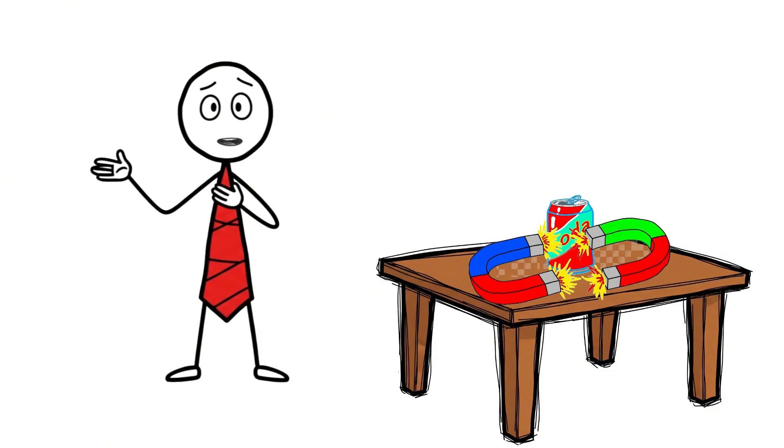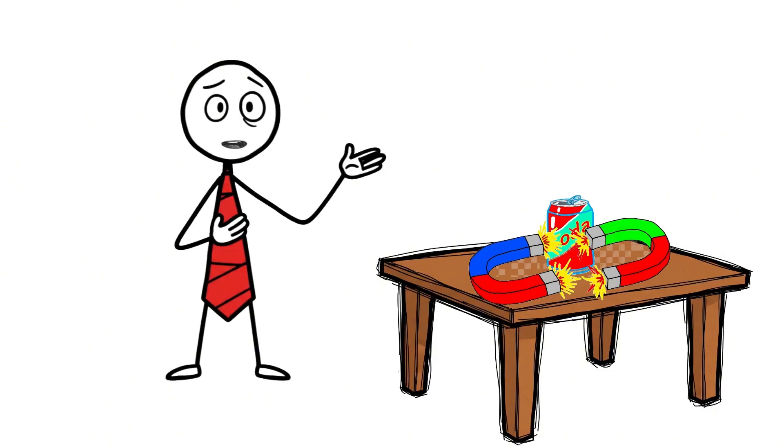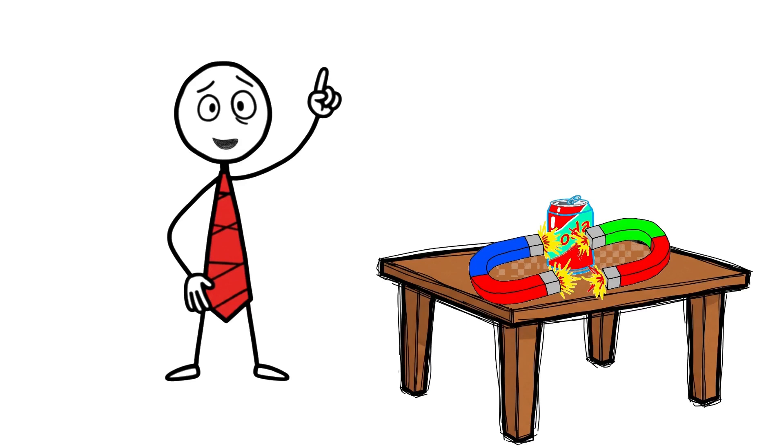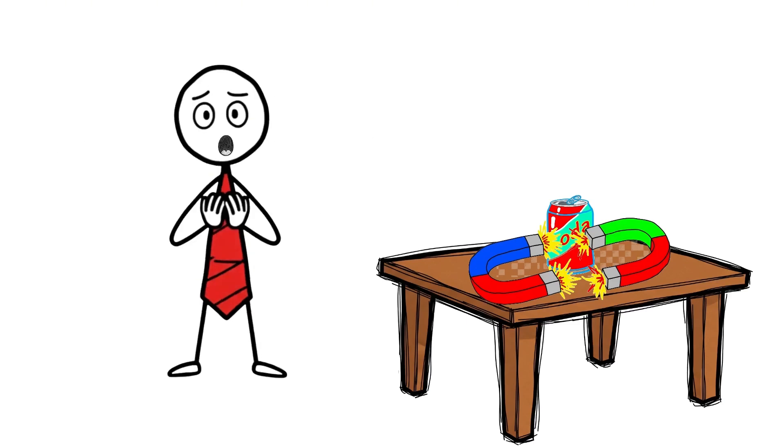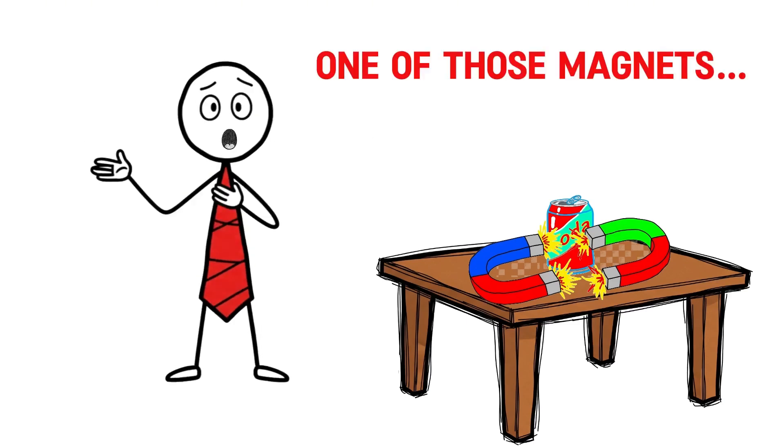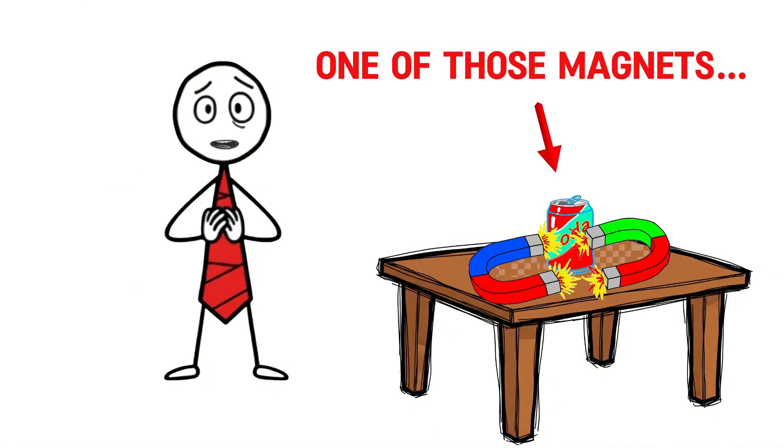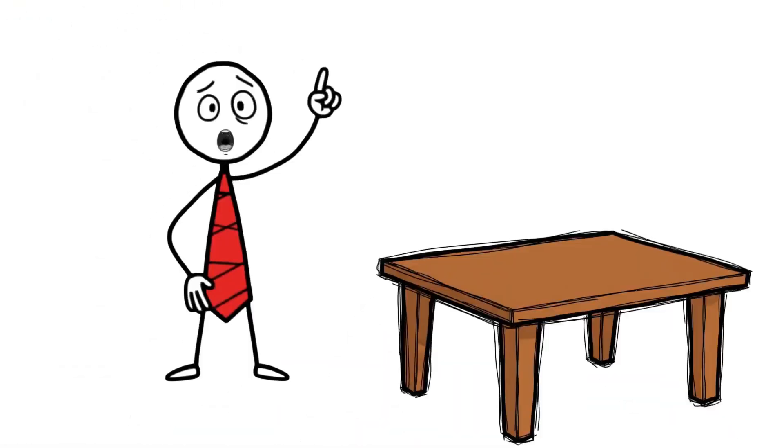They repel each other so violently that the can is obliterated in the crossfire. But the coolest part is, one of those magnets was the can itself. Here's the science.